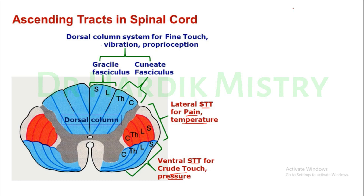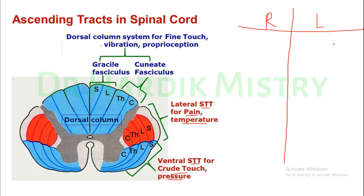For example, this is the right side and that is the left side. In the dorsal column system, once sensory or afferent fibers enter the spinal cord, they ascend on the same side until the medulla oblongata. After the medulla oblongata, they cross to the opposite side and ascend to the different areas of the brain.